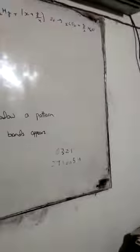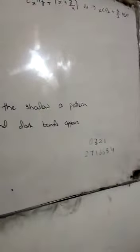And last thing, near the edge of the shadow, a pattern consisting of bright and dark bands appear. So, all of the above are correct. Thank you.